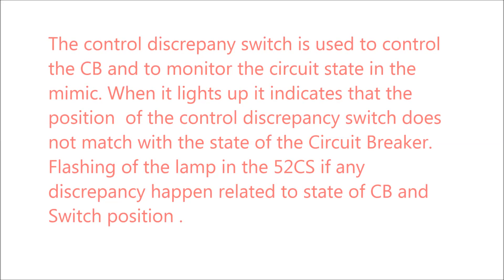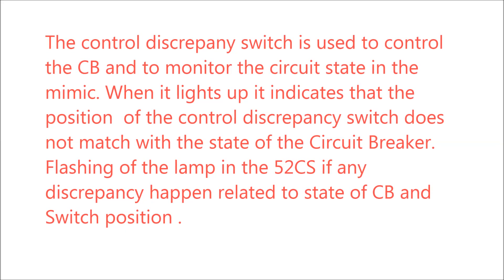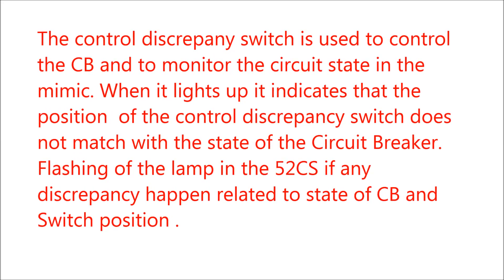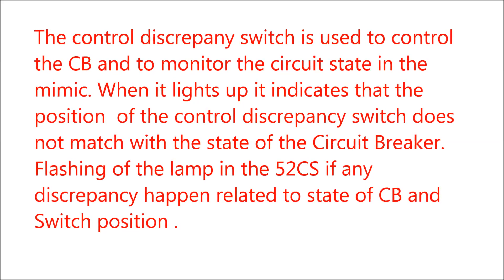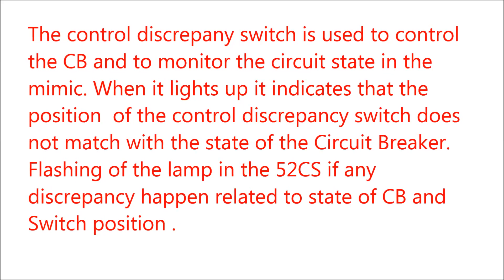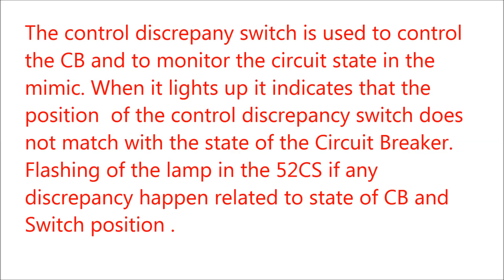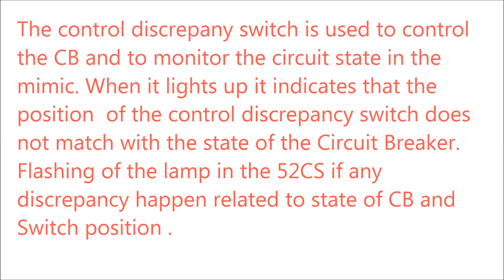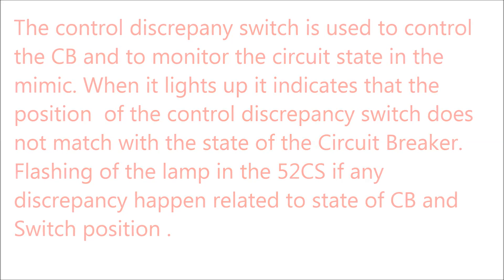When it lights up or illuminates, it indicates that the position of the control discrepancy switch does not match with the state of the circuit breaker. Flashing of the lamp in the discrepancy type control switch occurs if any discrepancy happens related to the state of the CB and the switch positions.